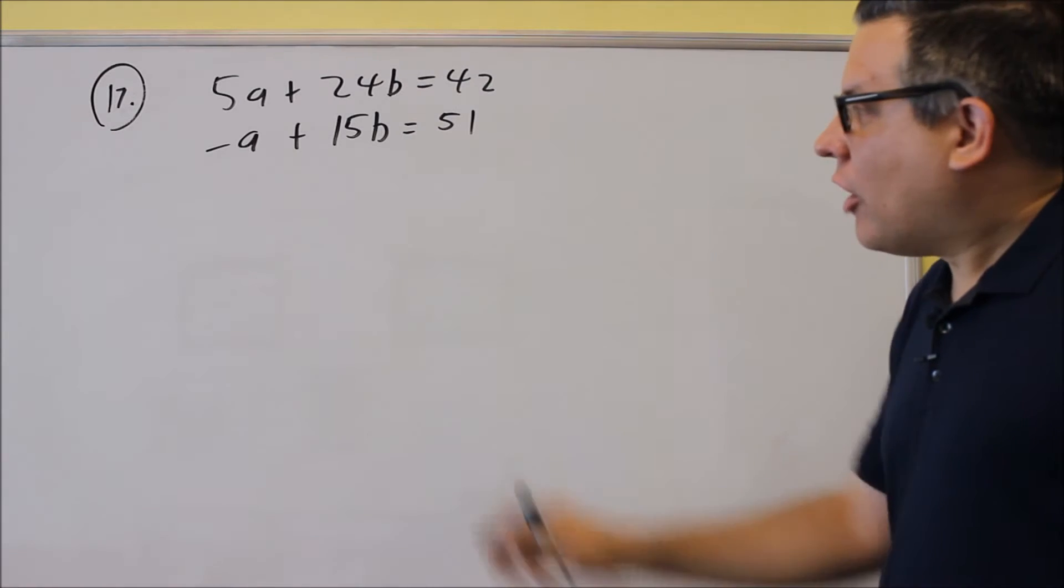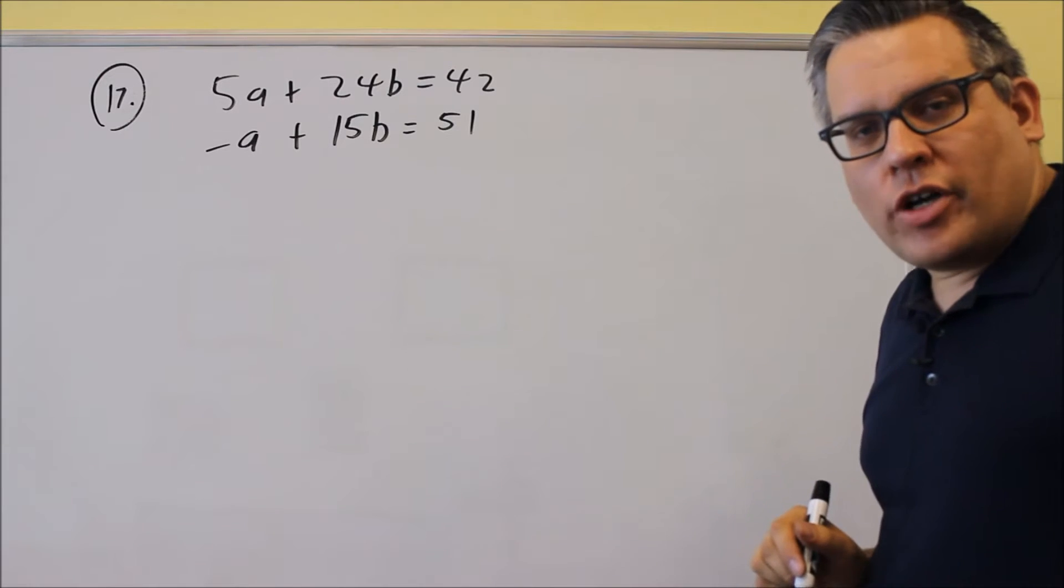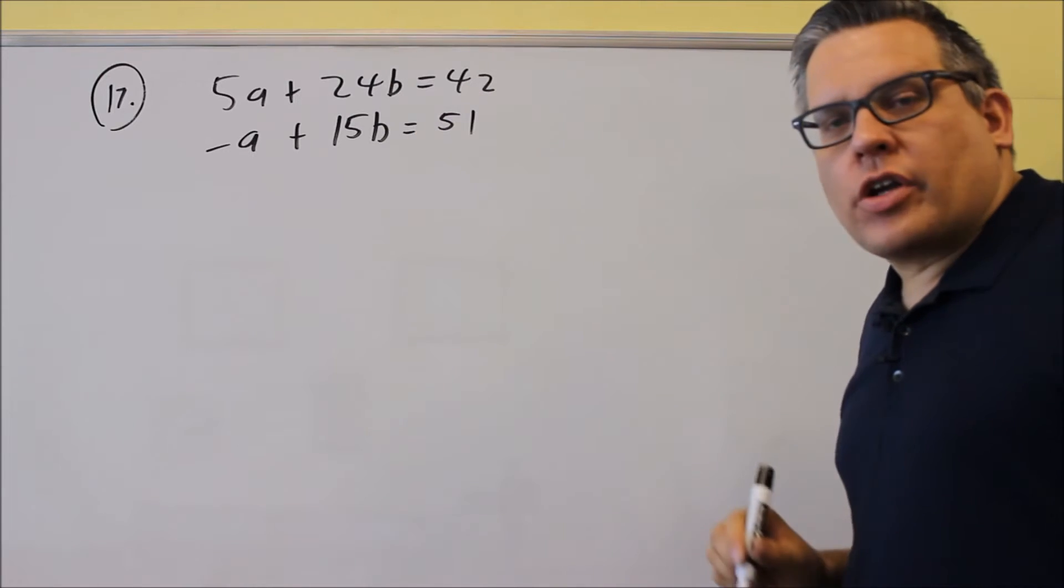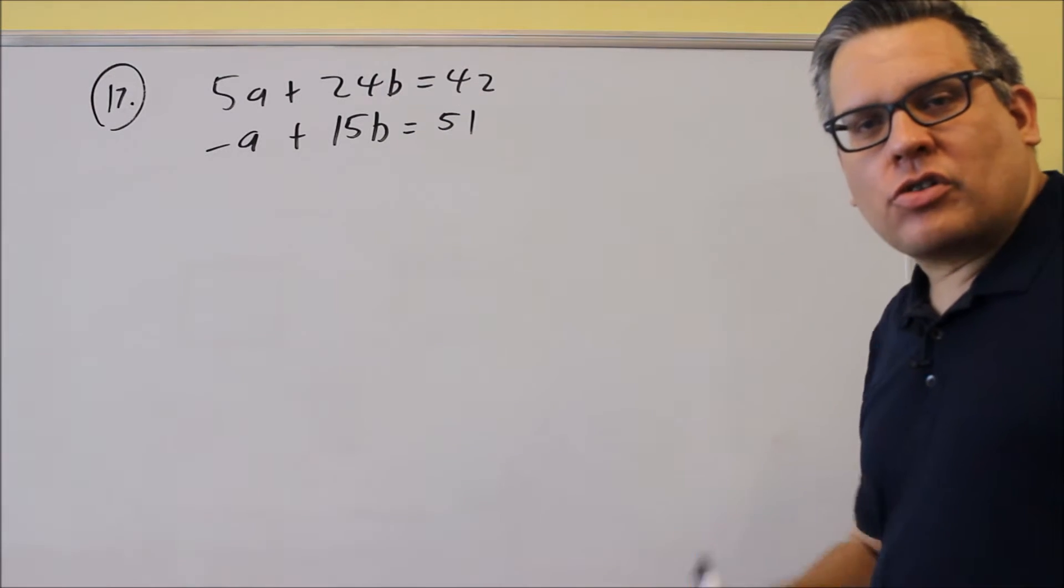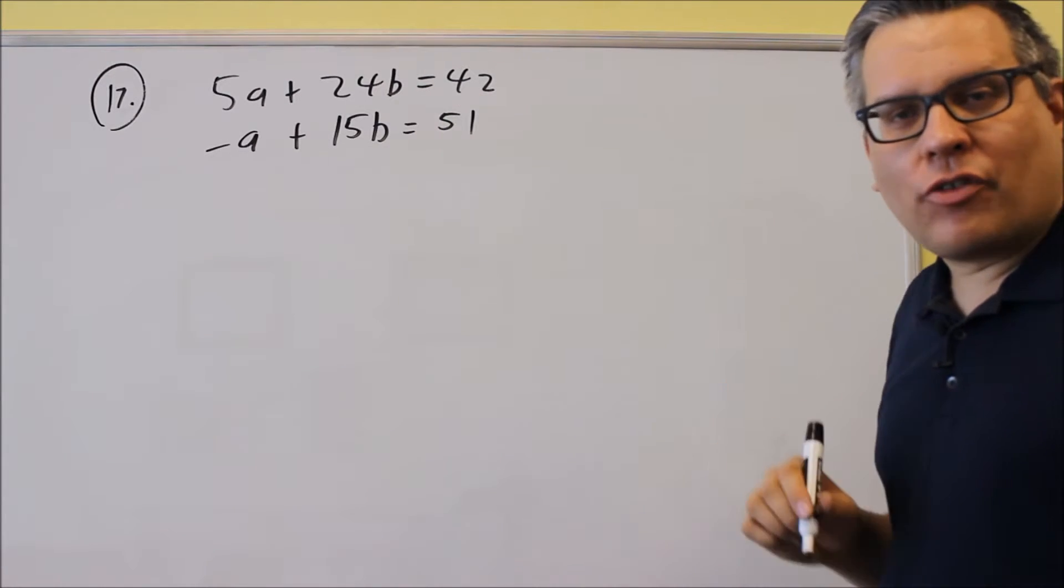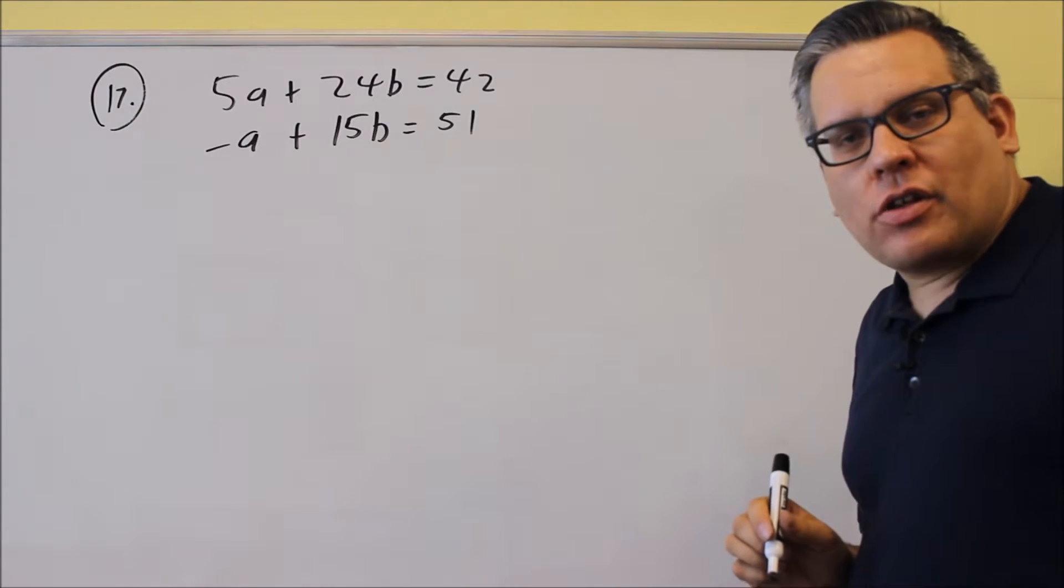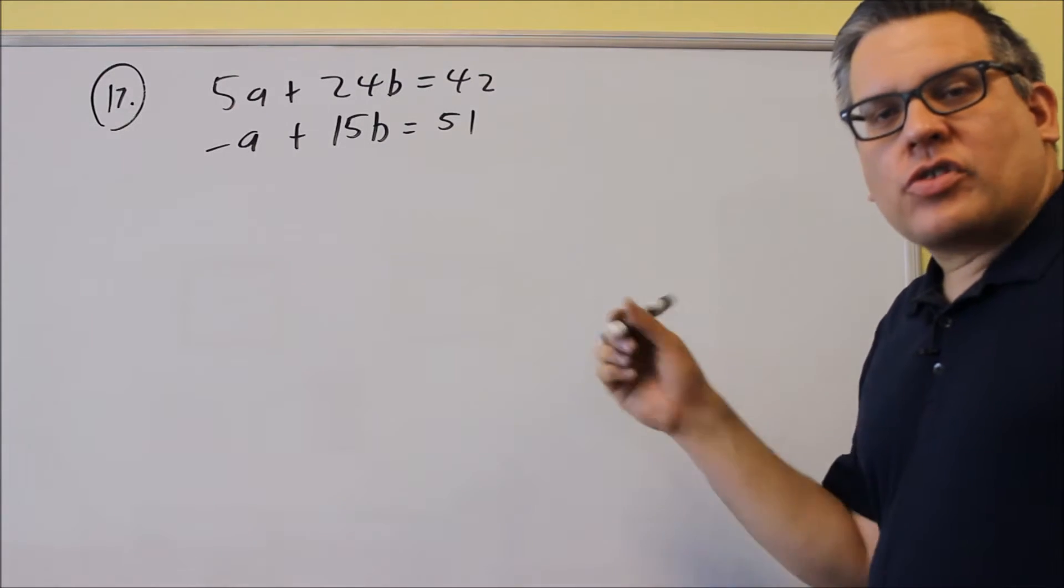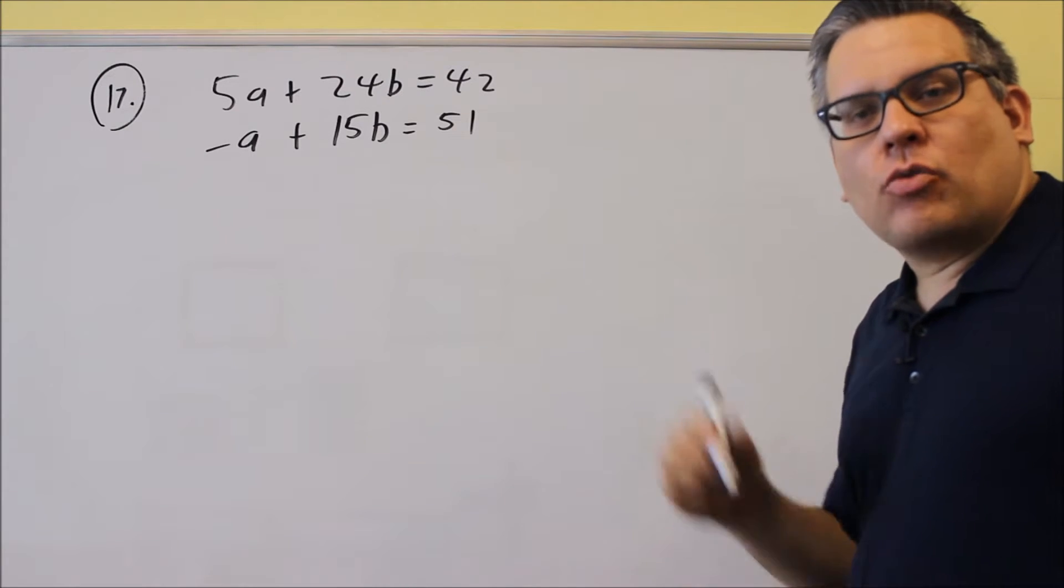Okay, number 17 and 18 are going to be involving solving a systems of equations. Now the idea here is you want to get rid of one of the variables so you can solve for one variable and you can solve for the second one later. There's two different methods that we're going to use in this test here, one's elimination and one's substitution.